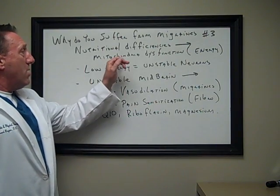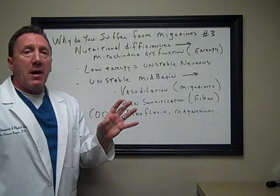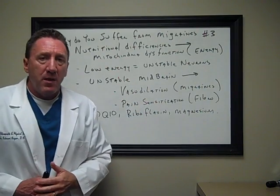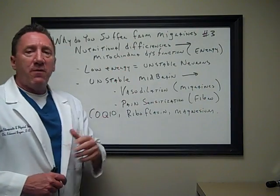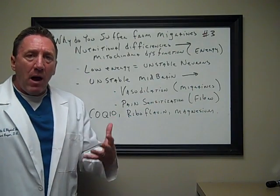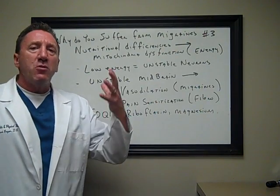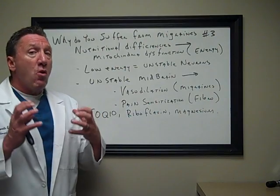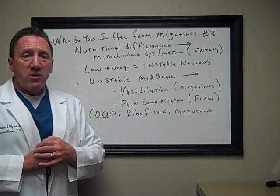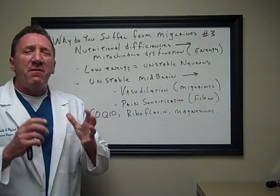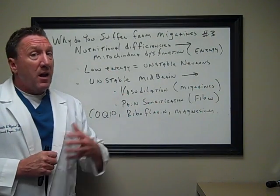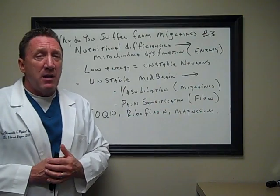Folks, there's an area in all of our cells in our body — except for our red blood cells — called the mitochondria. The mitochondria, if you remember your high school biology, are the powerhouses in our cells. They produce energy. Your neurons in your brain require more energy than any other cells in your entire body by far. Our brain consumes 30% of our energy needs, and it only weighs 2% of our body weight.